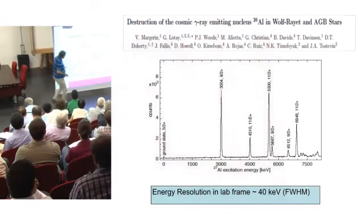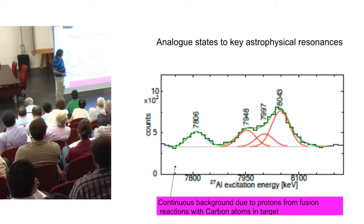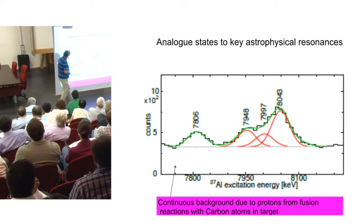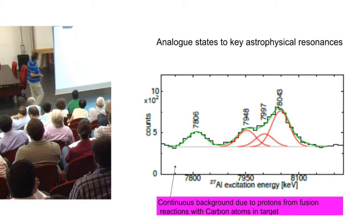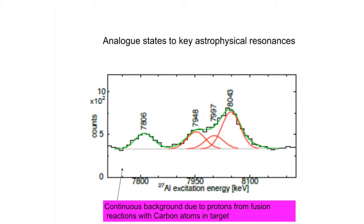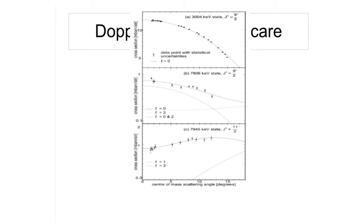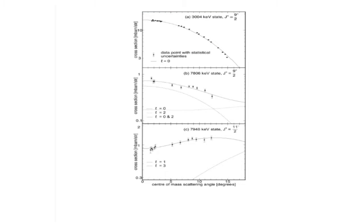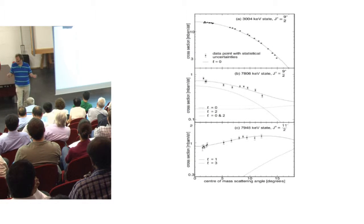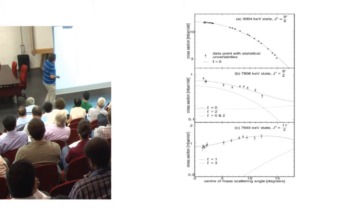If we look at the bit that's important for the astrophysics, we see the importance of resolution. This is the important analog state. Some experiments have suggested it wasn't important. However, if you do the analysis, the angular distributions show this is a pure L equals zero state — very nice fit. This is the important state; it's actually a combination of L equals zero and L equals two. And for comparison, I show the state that was measured at TRIUMF, where they just measured the cross-section. Magically, that's another pure negative parity state — nuclear structure coming in again.